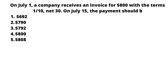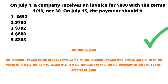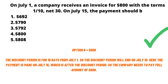The question is about the payment terms. If we pay within ten days we get a discount; if we pay within 30 days we do not get that discount. The answer is option D — $800. The discount period is ten days from July 1, ending July 10. Since payment is made on July 15, which is after the discount period, the company needs to pay the full amount of $800.